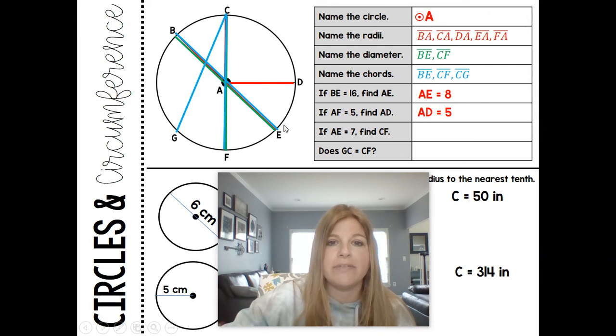If AE is 7, find CF. If AE is 7, find CF. So AE is a radius. CF is a diameter. So it doesn't matter that this AE isn't involved with CF. We actually know that AE is equal to AF. So if AE is 7, then AF is 7. And if this is 7, then CA is 7. 7 plus 7 is 14.